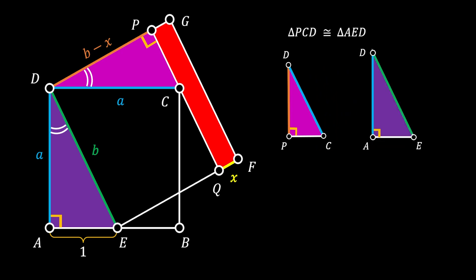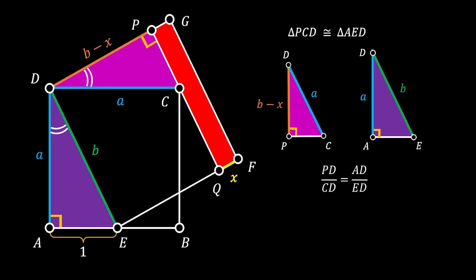If we isolate both triangles, we can mark their sides as b minus x and a for our pink triangle, and a and b for our purple triangle. Using the rule of similarity, the relation between sides PD and CD must equal the relation between sides AD and ED.